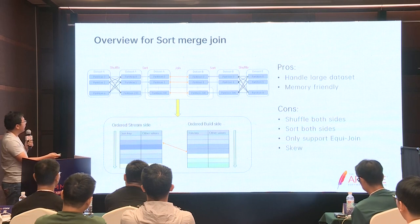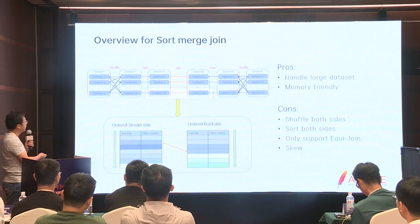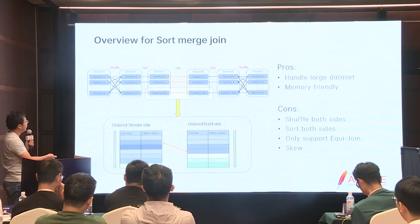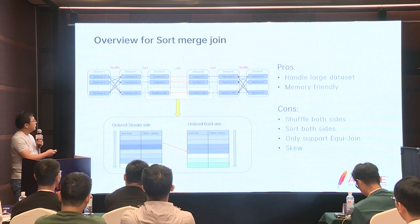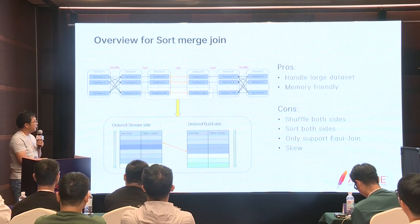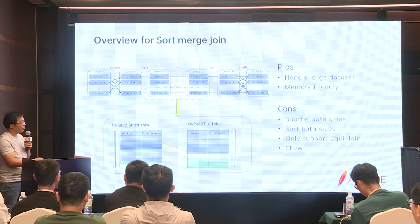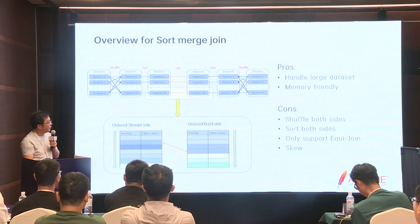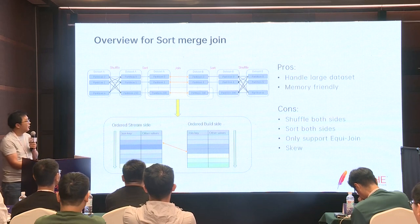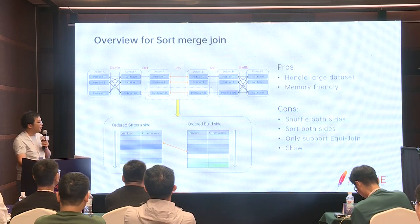SortMergeJoin的流程是左右两边分别按照相同的Partition Number，按照各自的Join Key做Shuffle。Shuffle完了以后做Sort，在Partition内部做Sort，Sort完了以后做Join。 (SortMergeJoin process: both sides shuffle by the same partition number using their respective join keys, then sort within each partition, then perform the join.)